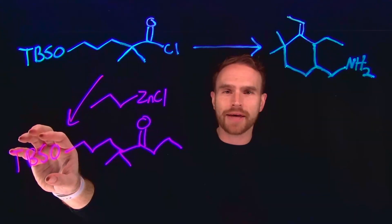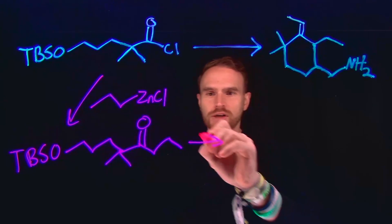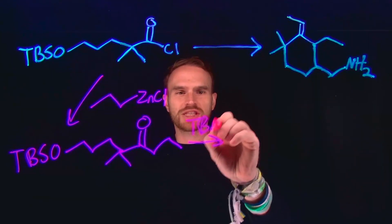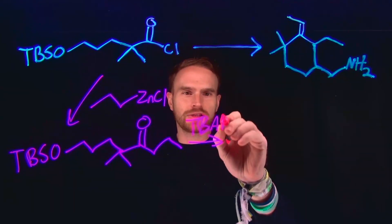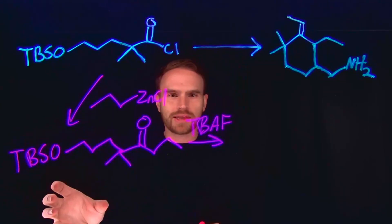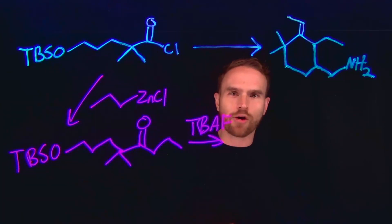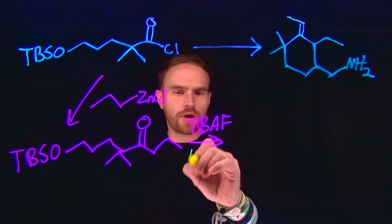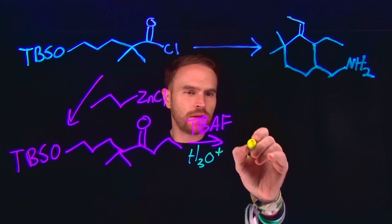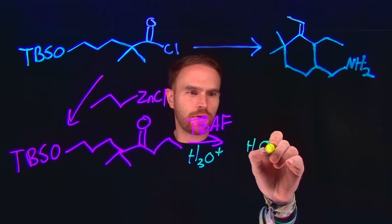A common example of what to use is called TBAF, which acts as a fluoride donor. It's going to attack the silyl ether, liberate that portion, and leave us behind with just the alcohol, assuming that we're adding some sort of acid workup as well.